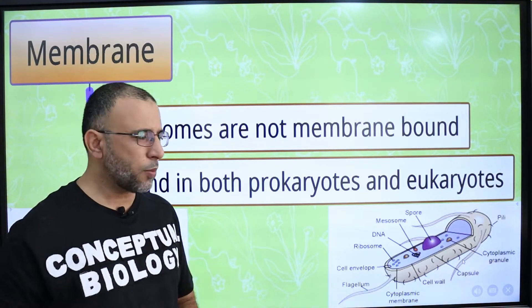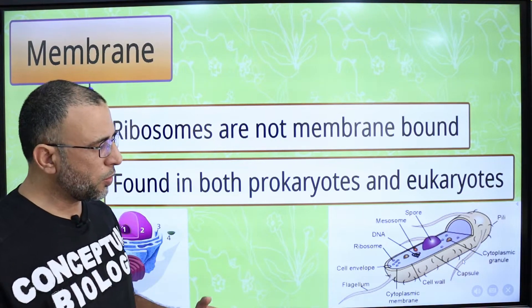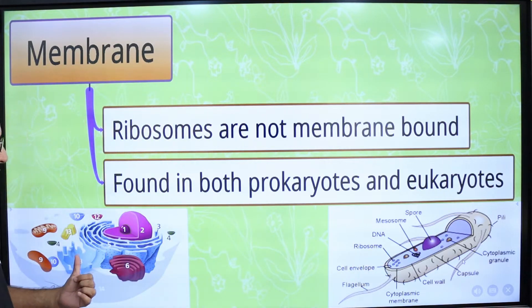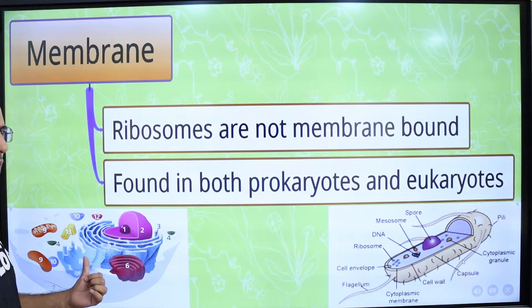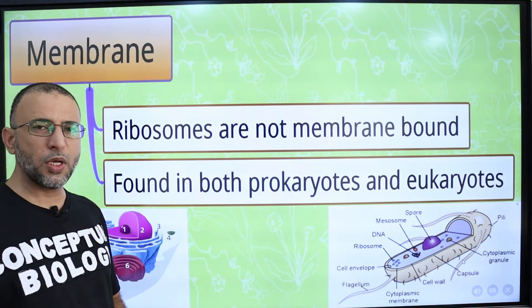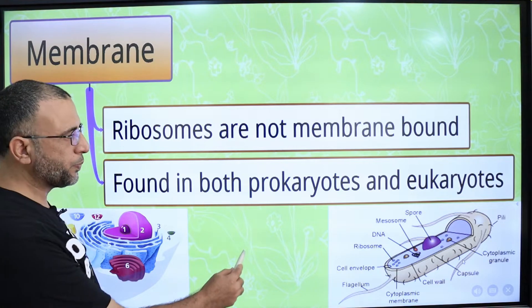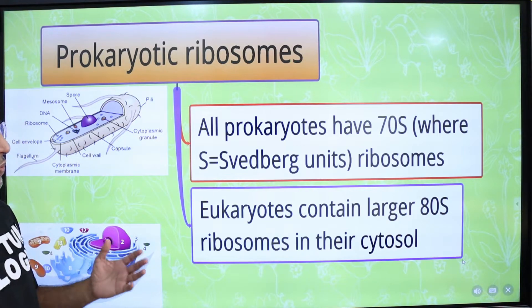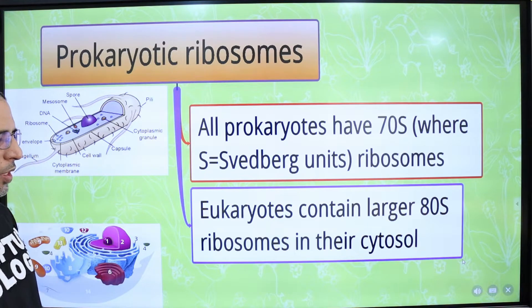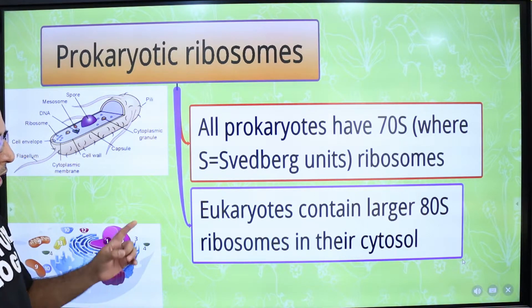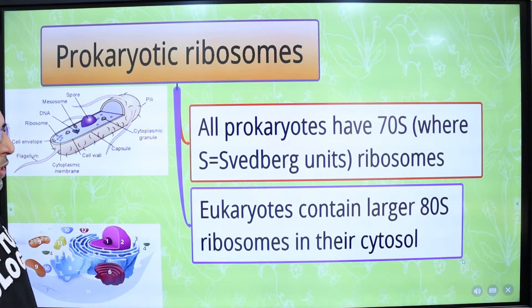Prokaryotic ribosomes are present in prokaryotes like bacteria, and eukaryotic ribosomes are present in eukaryotic cells like animal cells, plant cells, and fungi. Ribosomes are not bounded by any membrane. All prokaryotes have 70S ribosomes and eukaryotes have 80S ribosomes. S is the Svedberg unit.